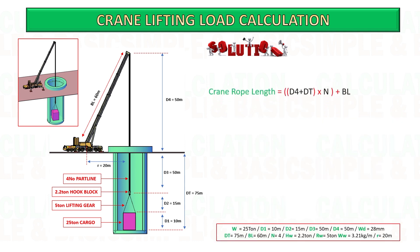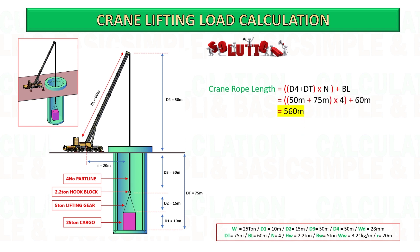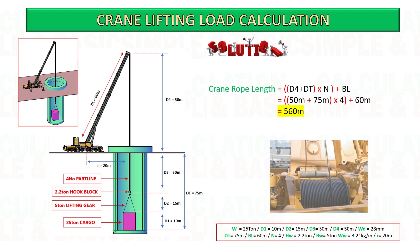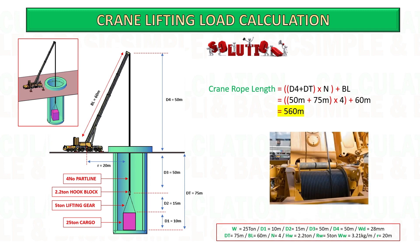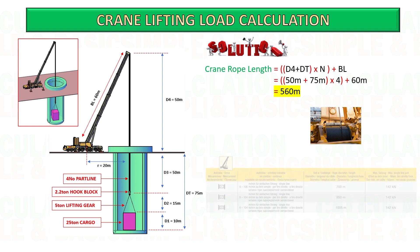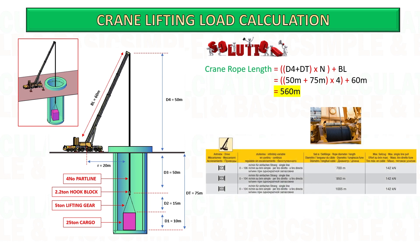Start to calculate the required crane rope length by adding the total height and multiplying it by the number of part lines, plus adding the length of the boom. Based on the calculation, it requires 560 meters length of rope. We need to select more than this length — see the sample below.